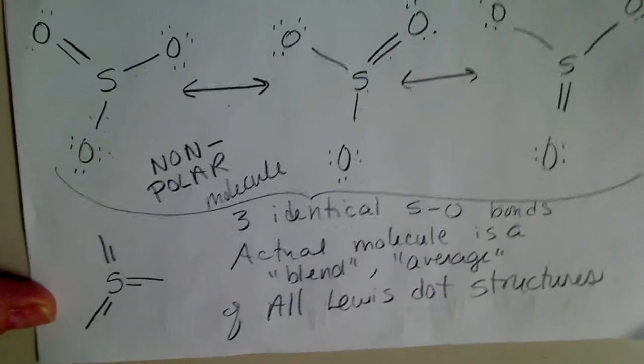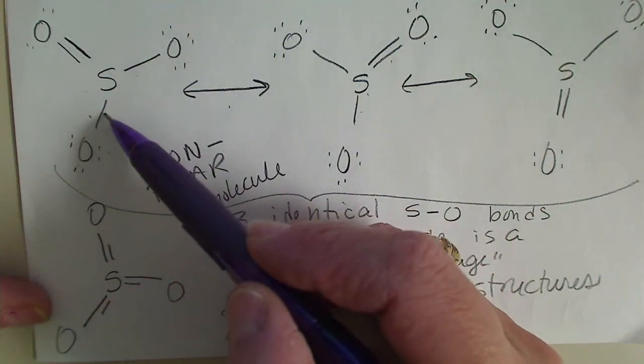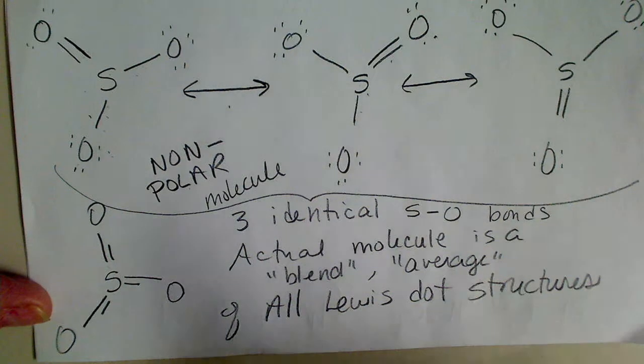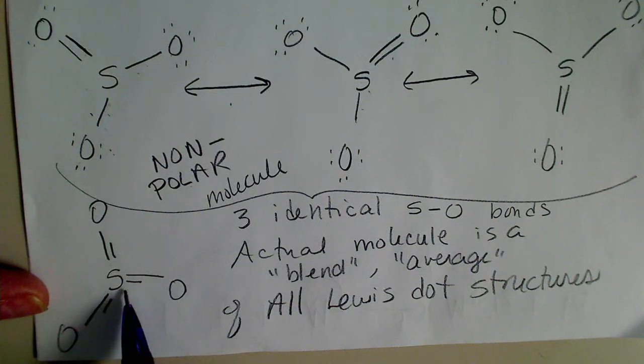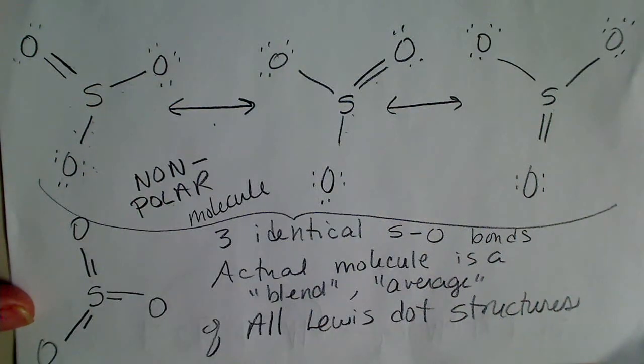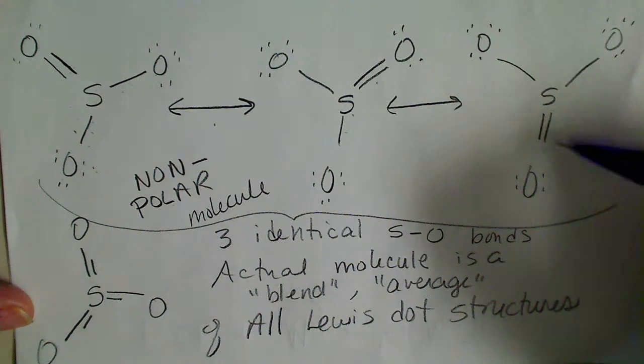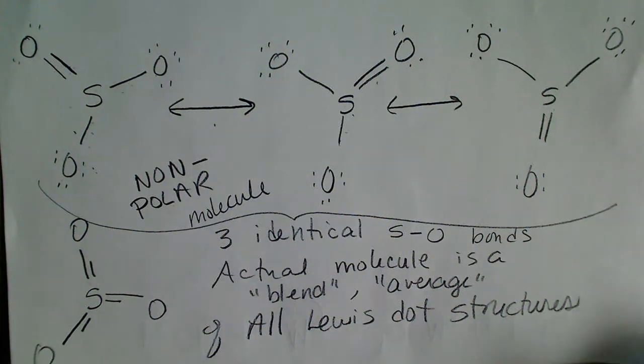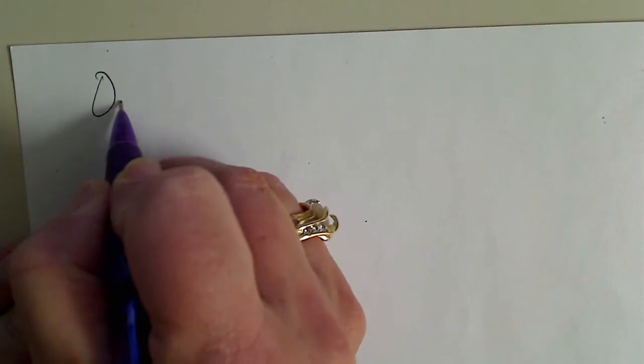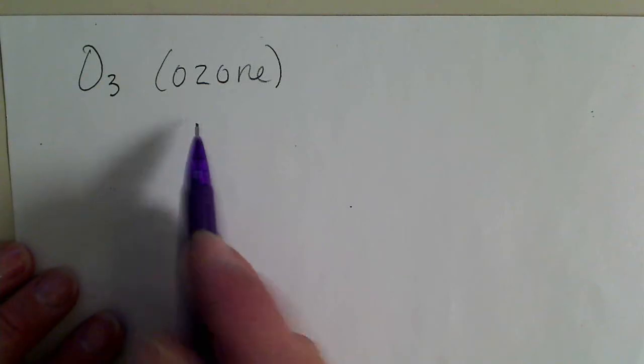If we draw all three resonance structures, it might be easier to see that. The actual molecule is like two-thirds single bond and one-third double bond. Instead of trying to draw that, the bond lengths would be somewhere in between a single bond length and a double bond length. Instead of trying to draw this combination of all three structures, we just show three different resonance structures. That will be very important in the next chapter when we start talking about hybrid orbital theory. On the next page, I'm going to do ozone, which is O3, an allotrope of oxygen.